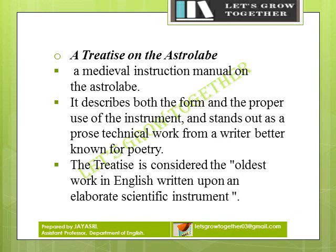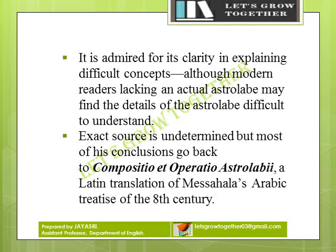A Treatise on the Astrolabe is a medieval instruction manual on the astrolabe. It describes both the form and the proper use of the instrument, and stands out as a prose technical work from a writer better known for poetry. The treatise is considered the oldest work in English written upon an elaborate scientific instrument, and is admired for its clarity in explaining difficult concepts. Its exact source is undetermined, but most of his conclusions go back to the Compositio et operatio astrolabii, a Latin translation of Messahala's Arabic treatise of the 8th century.